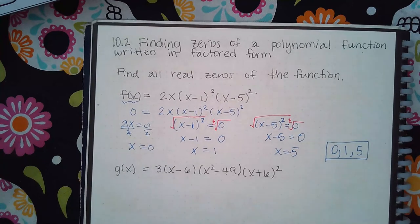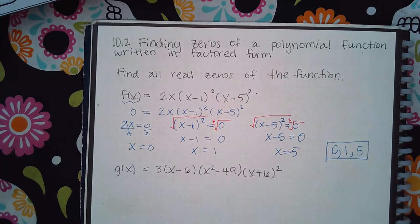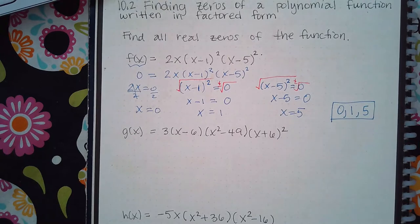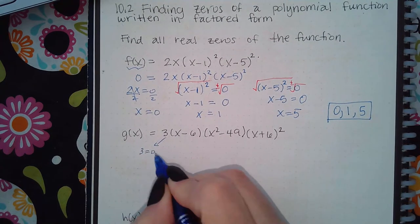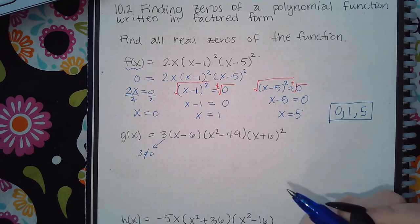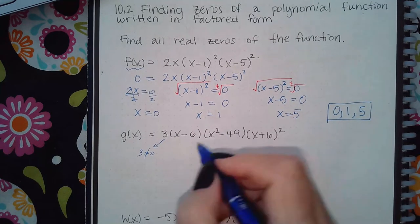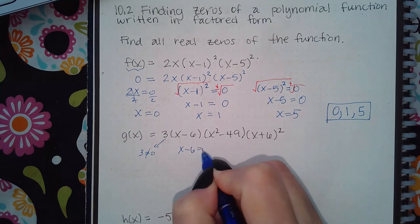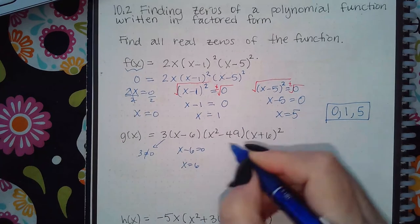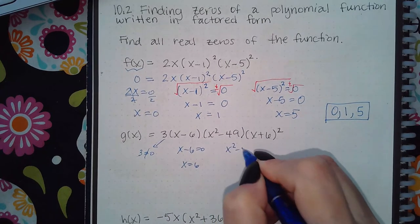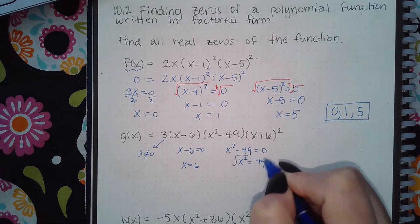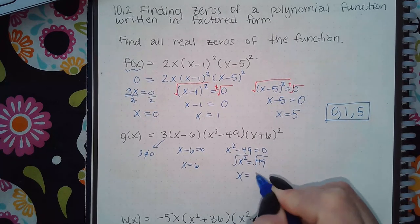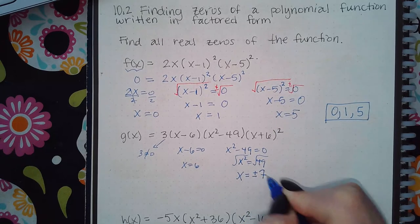Now same thing here. You can't take this factor equal to zero because 3 does not equal zero, so it doesn't make sense there. But if I take this factor equal to zero I get x equal to 6. If I take this factor equal to zero I get x² equals 49, and if I take the square root of that I get x equals plus or minus 7, so I have two values here.